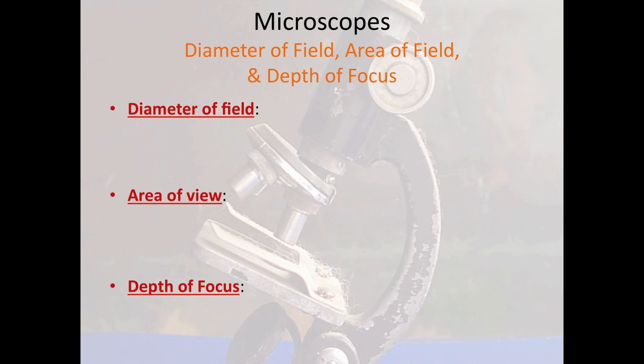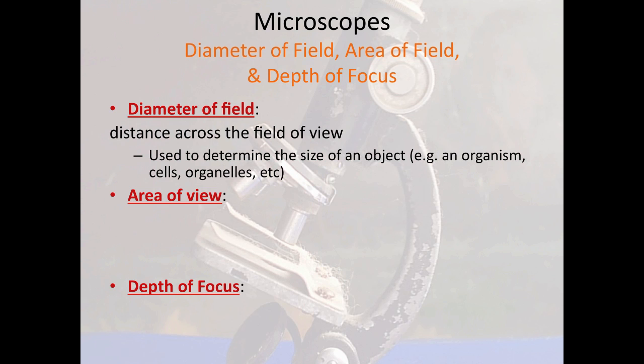Other features helpful to know when using a microscope include the diameter of field. When you look through a microscope and see that light circle, the distance across that field of view can be measured or calculated. By knowing the diameter of the whole circle, it helps us know the size of objects we're looking at — whether it's an entire organism, cells of an organism, or organelles of a cell. Knowing the size of something helps you classify it, identify it, or just know what you're looking at.